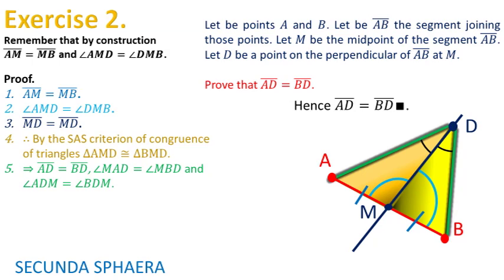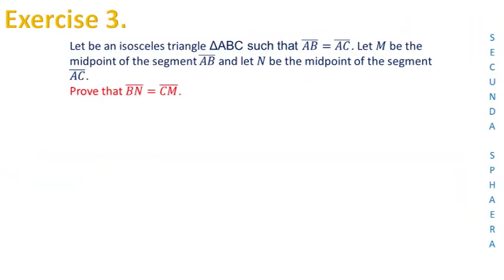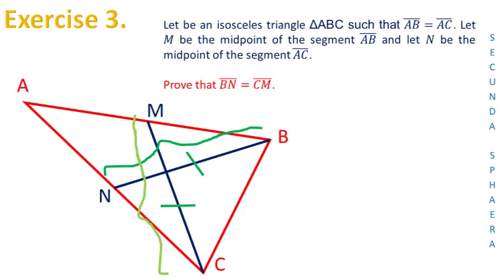It is time to jump into the third problem. This problem states: let there be an isosceles triangle ABC such that the sides AB and AC are equal. Let M be the midpoint of the segment AB and let N be the midpoint of the segment AC, and it asks to prove that the segments BN and CM are equal. This time, there will be presented two different proofs for this problem.